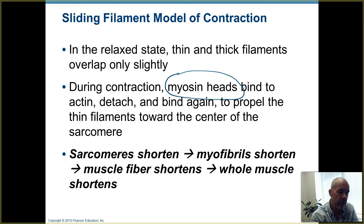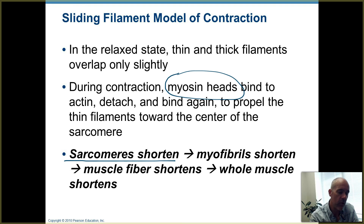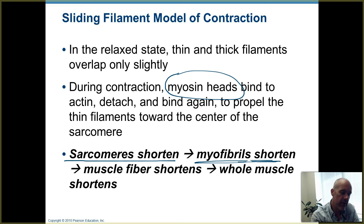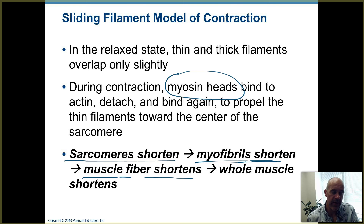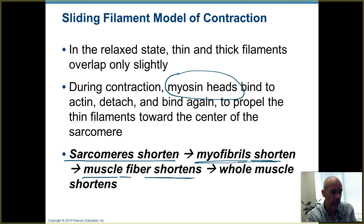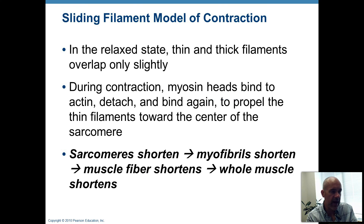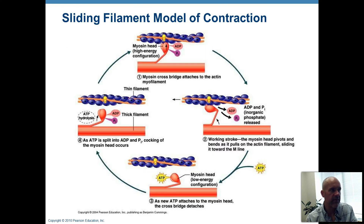When sarcomeres shorten — and sarcomeres are the individual subunits of myofibrils — whole myofibrils shorten. Since a muscle cell or muscle fiber is basically a bundle of myofibrils, the whole muscle fiber shortens. When a whole bunch of muscle cells within an entire muscle are contracting at the same time, the whole muscle winds up shortening. Those are the highlights of the sliding filament model of contraction.